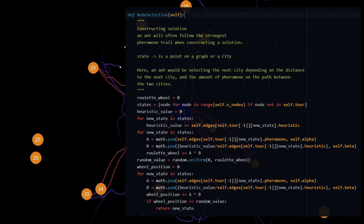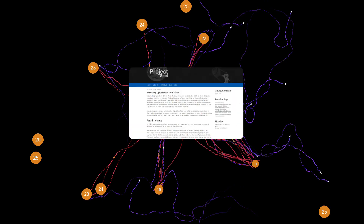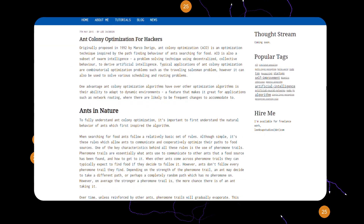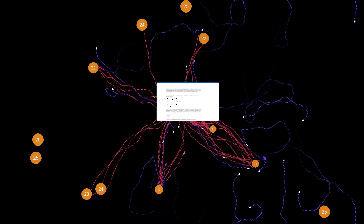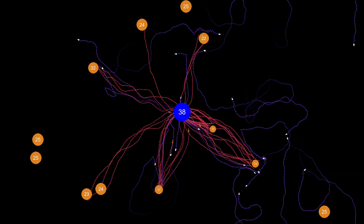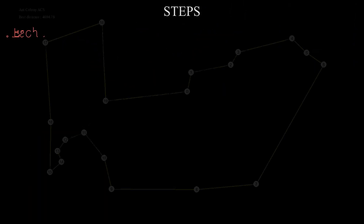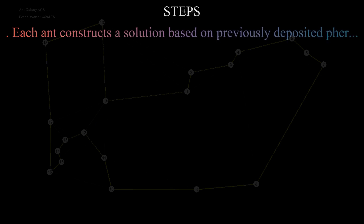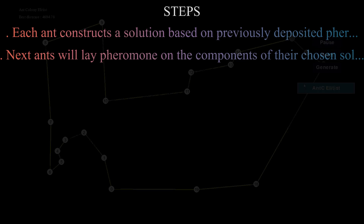On average, the stronger a pheromone trail is, the more likely an ant is to take it. Now let's talk about how the algorithm works. First, each ant in the colony constructs a solution based on previously deposited pheromone trails. Next, ants lay pheromone trails on the components of their chosen solution depending on the solution's quality — in this case, these are the edges, or the paths between the cities or points.